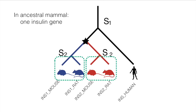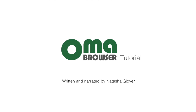By contrast, when we refer to the two rodent copies, we mean that we should consider two types of genes which might have differentiated in subtle ways. We distinguish insulin 1 from insulin 2. It's therefore quite natural that there should be two HOGs at that level. Now that we know what HOGs are, in the next part of this series we will discuss how to explore HOGs with the OMA browser.